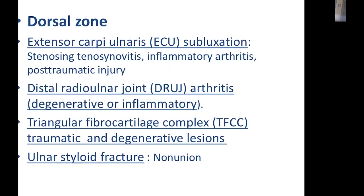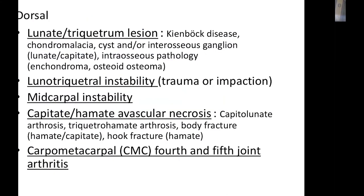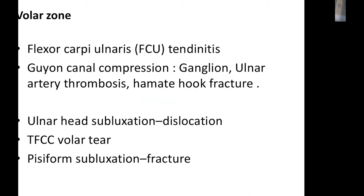The causes of ulnar-side rest pain include ECU problems, DRUJ arthritis and inflammation, TFCC tear, ulnar styloid fracture, lunate and triquetrum pathology, pisiform cysts, lunotriquetral instability, midcarpal instability, capitate and hamate pathology such as avascular necrosis, cysts, tumors, and carpometacarpal arthritis. On the volar side: FCU tendinitis, Guyon's canal compression, ulnar nerve entrapment, ulnar head subluxation or dislocation, TFCC tear, and pisiform subluxation.